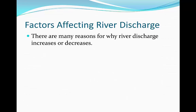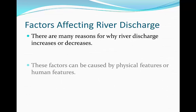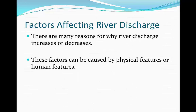There are many reasons for why a river may have a discharge which increases or decreases over a point in time. The discharge is basically the volume of water that is flowing through the river at a given point in time. These factors can be caused by either physical features or human features. Physical features are factors which make the discharge levels change that occur naturally in nature, and human features are factors which make the river discharge change which have been influenced by people.